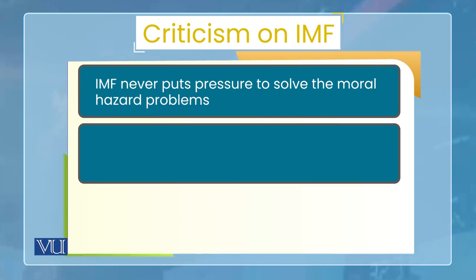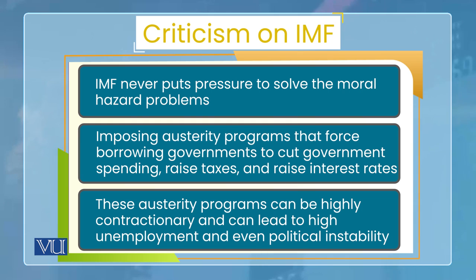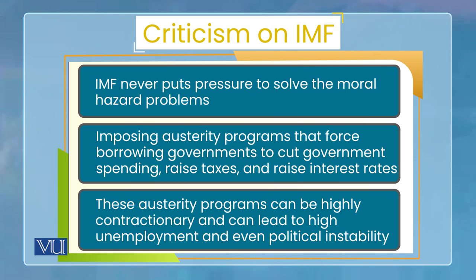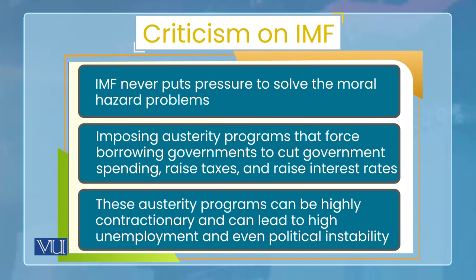There is also criticism that can be leveled at IMF's conditionalities, policies, and rescue strategies. The first criticism is that the moral hazard problem, which exists because the IMF rescues countries, is not explicitly addressed in IMF policies — the IMF does not provide a clear plan within its policies to prevent moral hazard. The second point is that the IMF indirectly tries to ensure countries maintain fiscal discipline and reduce fiscal deficits through austerity measures — that is, government-level savings programs — but cutting fiscal deficits and implementing austerity measures involves reducing government spending, raising taxes, and raising interest rates.